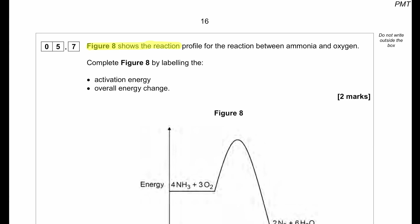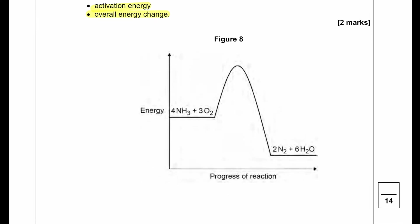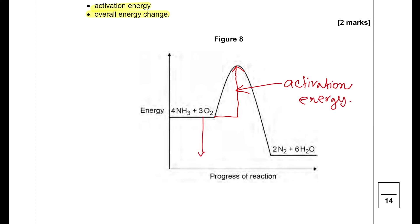Figure 8 shows the reaction profile for the reaction between ammonia and oxygen. Complete Figure 8 by labelling the activation energy and overall energy change. The activation energy is the peak of the profile. The overall energy change is the difference between the reactants and products energy levels.